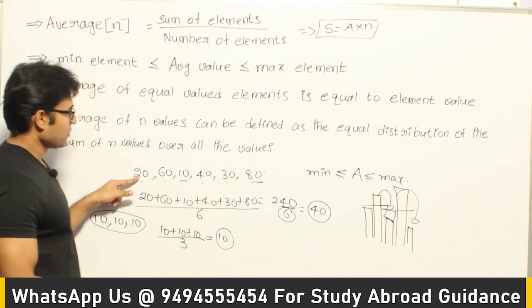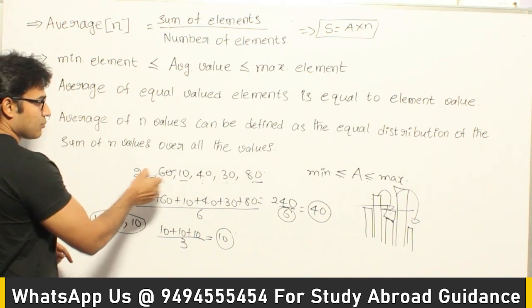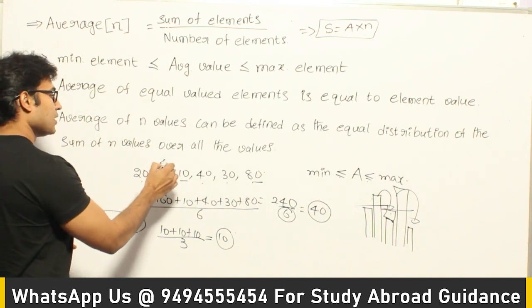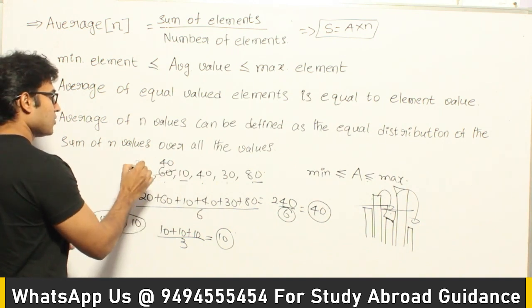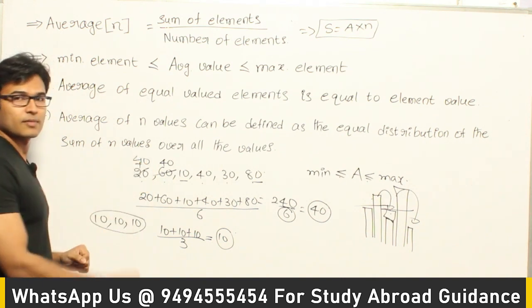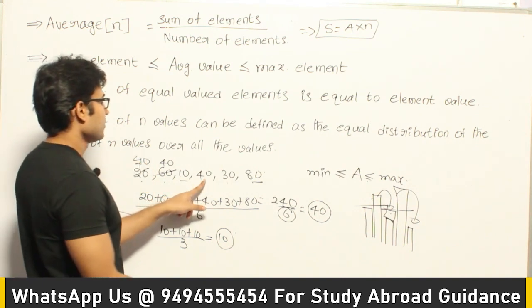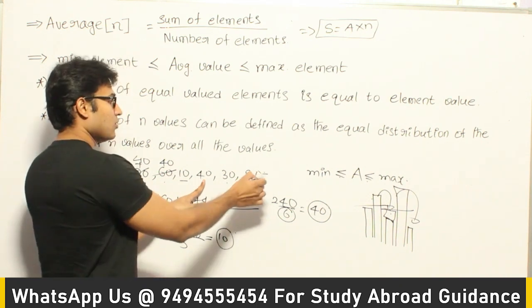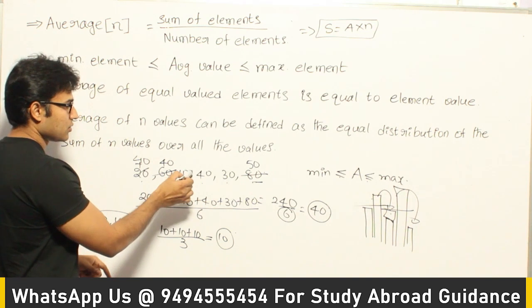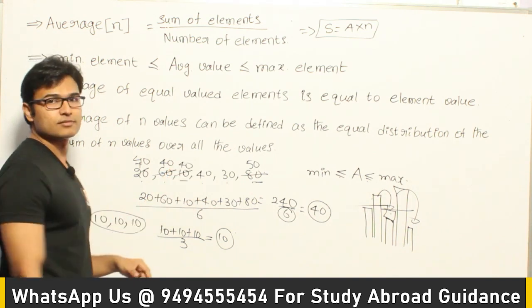Here I have only 20, so from this I can pull out 20 and I can give it to this. Then what does it become? It will be 40 and it will be plus 20, which means it will also become 40. And similarly here I have 80, so I can pull out 30 from it making it 50, and I can give that 30 to this making it 40.